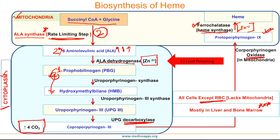Levels of ALA are increased in lead poisoning because lead inhibits ALA dehydrogenase, which contains zinc. The final step of heme synthesis involves the addition of iron to protoporphyrin to form heme in the presence of ferrochelatase, also called heme synthase.